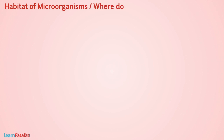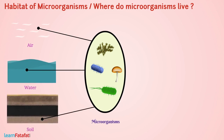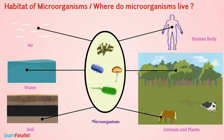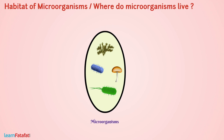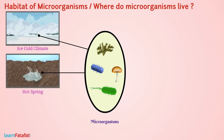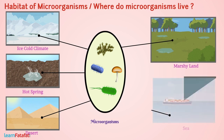Microorganisms are everywhere around us — in air, water, soil, in our body and the bodies of other animals and plants. These organisms can survive in all types of environments such as ice-cold climates, hot springs, deserts, marshy lands, and even at the bottom of the sea.